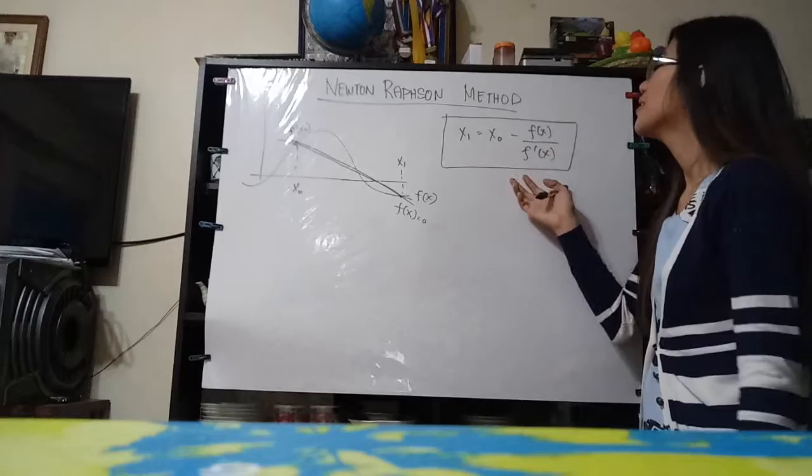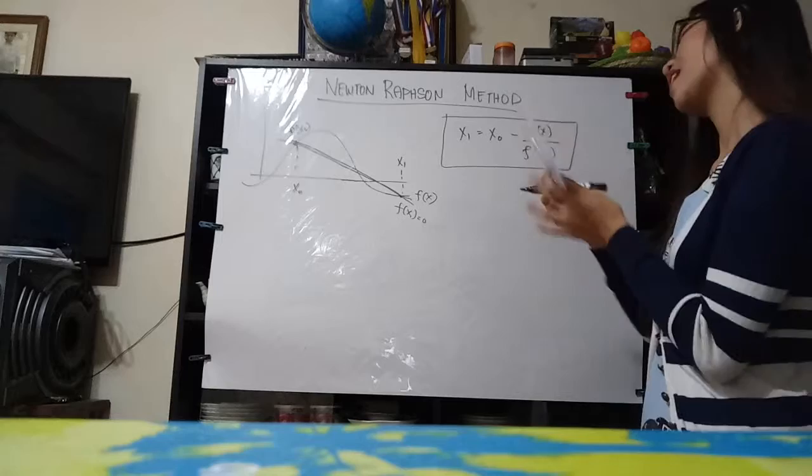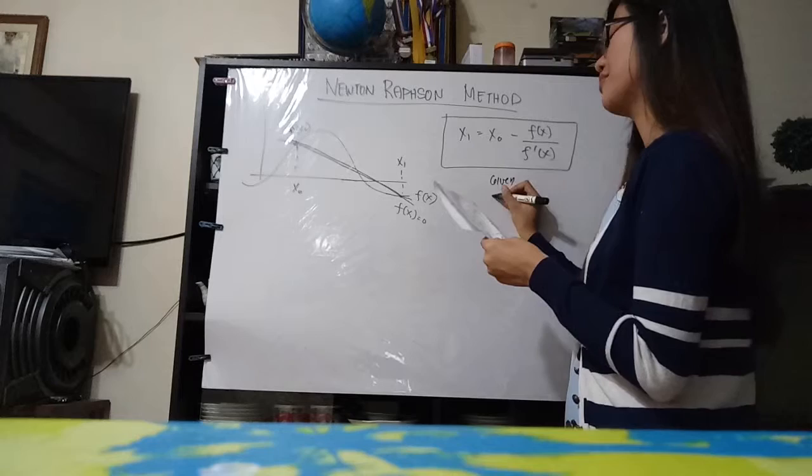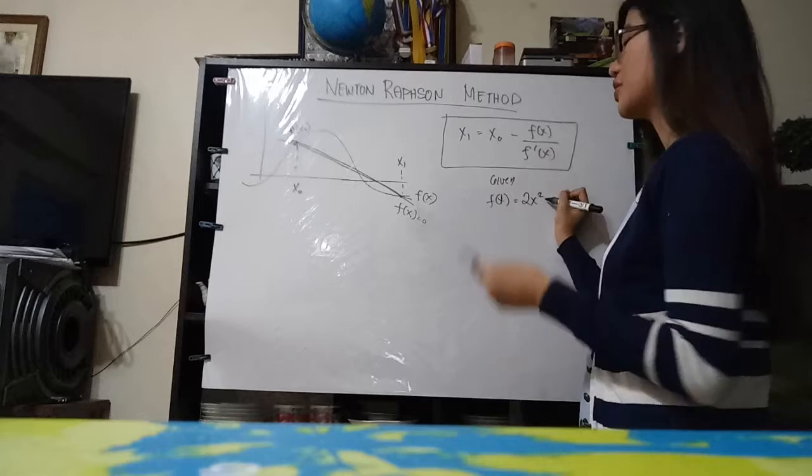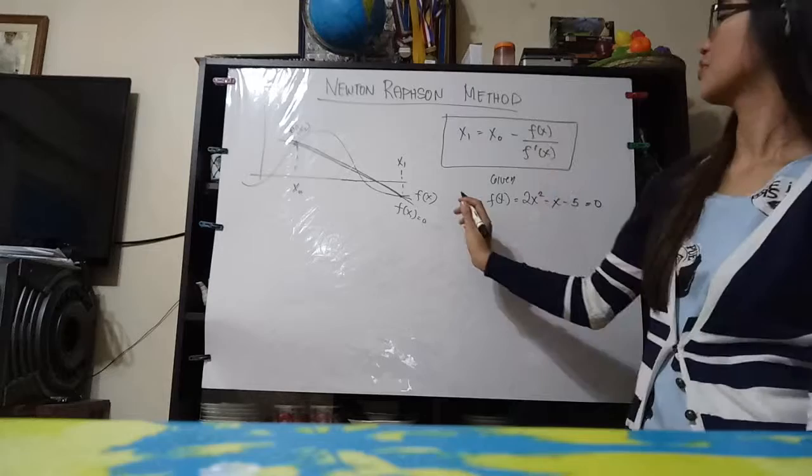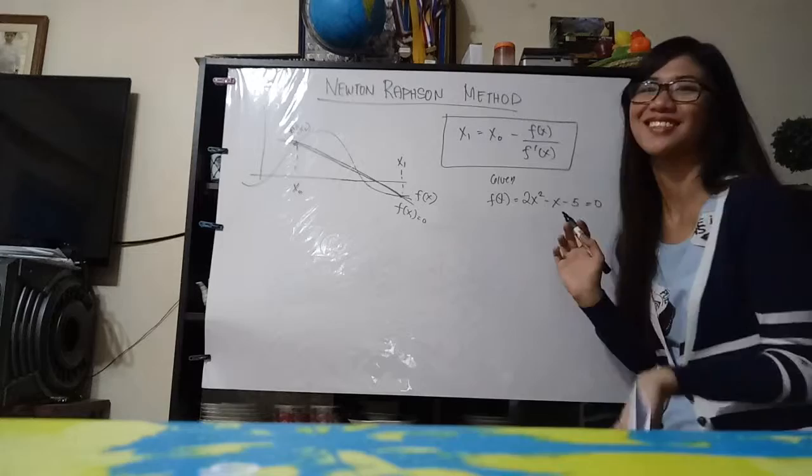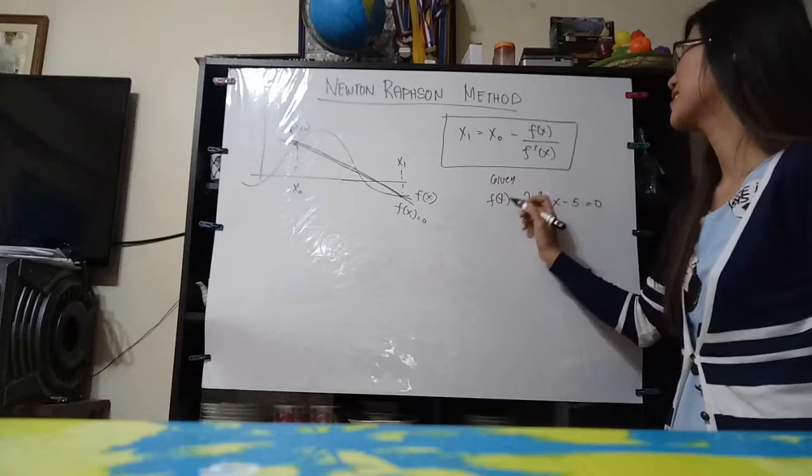So I have here an example. Given that we have a function with a value of 2x squared minus x minus 5 equals 0. So that is our first equation. This is our given equation.